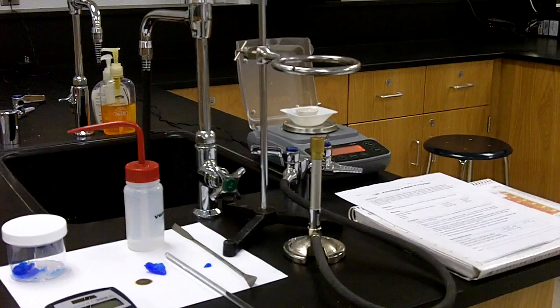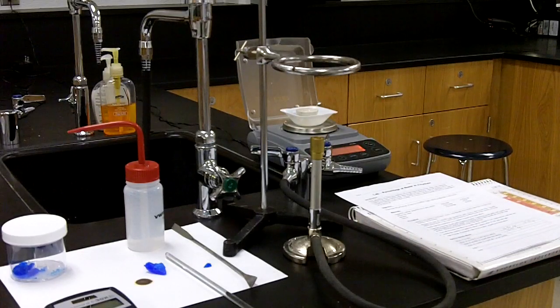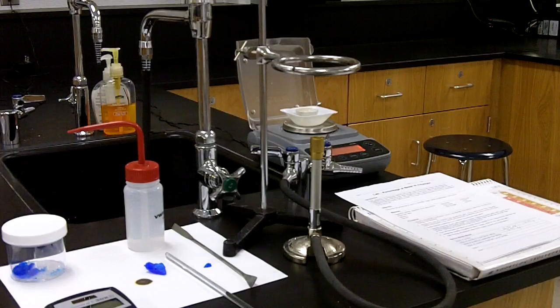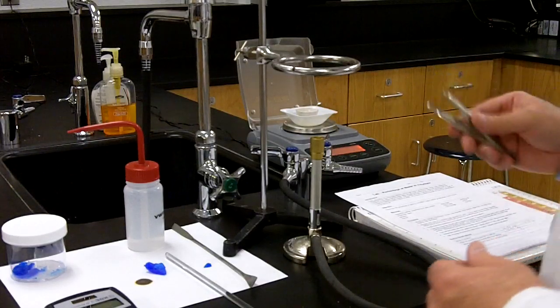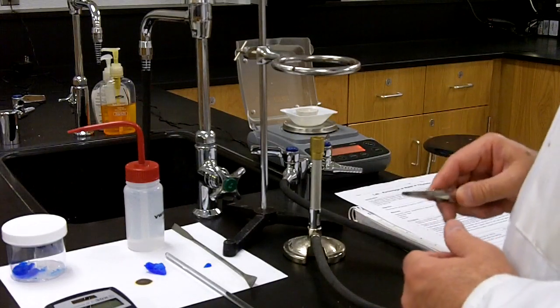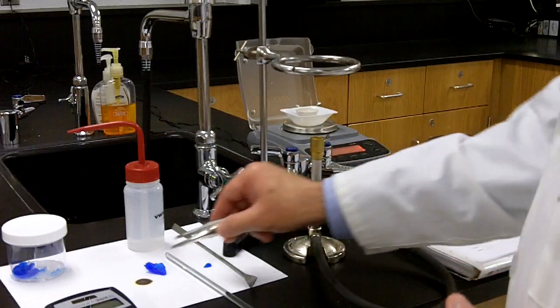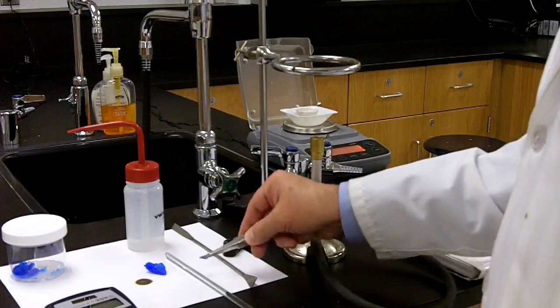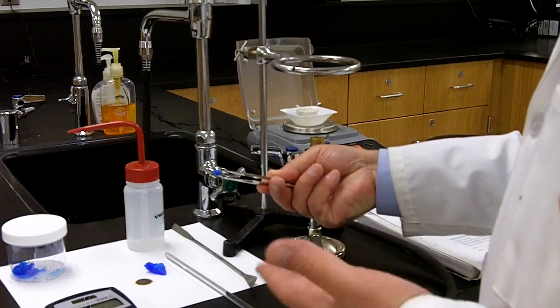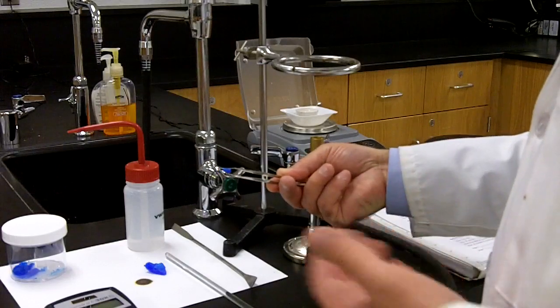The next thing I'm going to do is place a small amount of the copper 2 sulfate pentahydrate into the crucible. I'm not going to use that piece. I want to use a much smaller piece because it'll be a lot quicker, and I'll be able to get a measurement a lot faster.